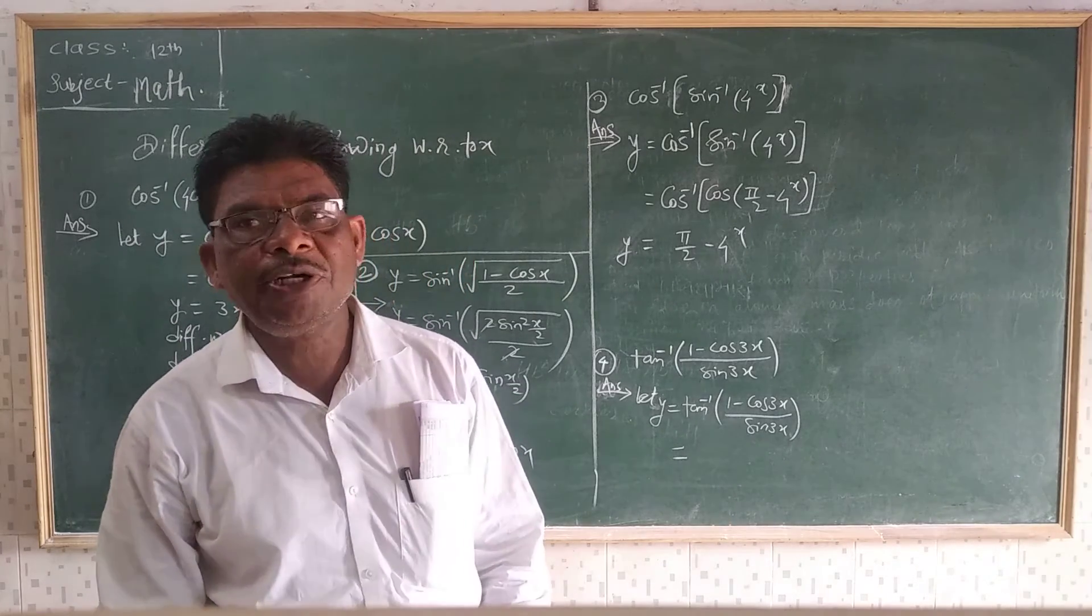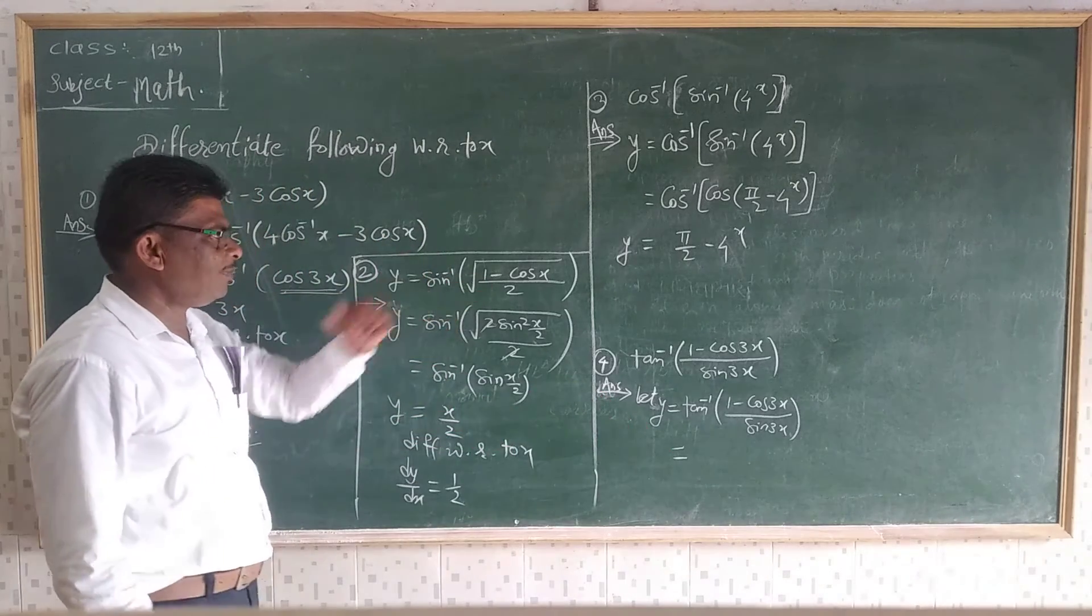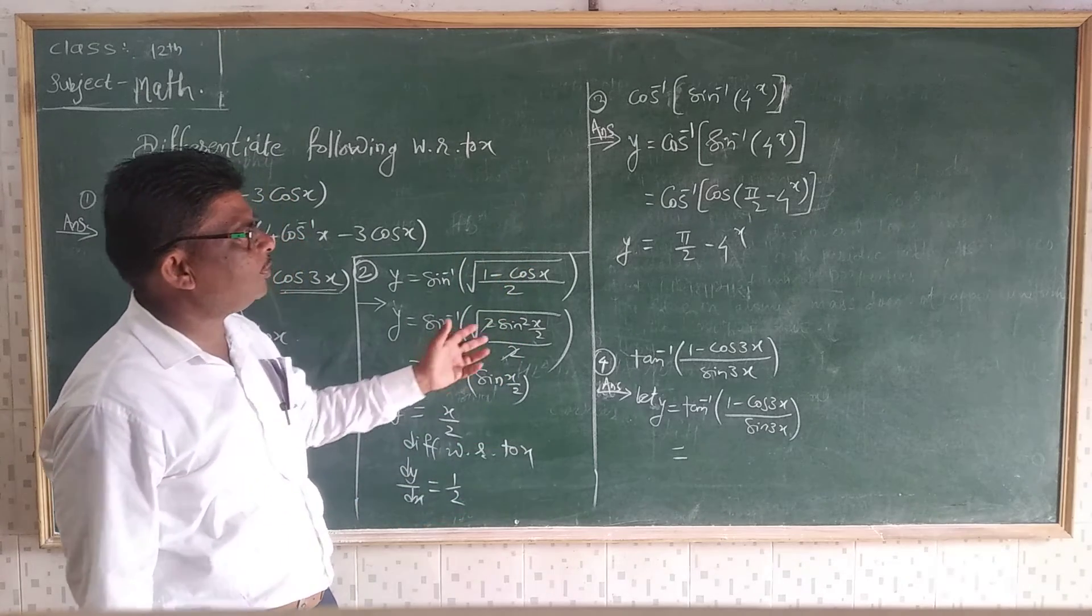So you learn the trigonometric formulas: cos of 3theta, 1 minus costheta, just like 1 plus costheta is 2 cos²(theta/2).